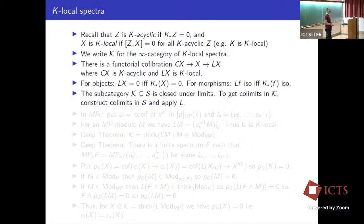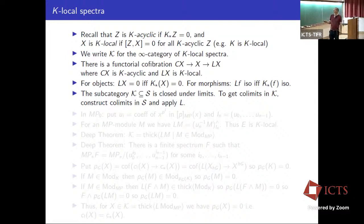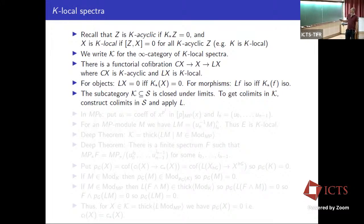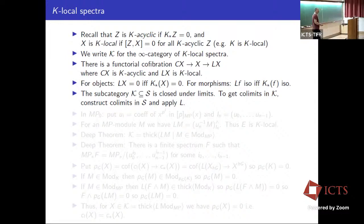We need to do limits and colimits in the category curly K, because we're looking at left and right adjoints Q lower star and Q lower shriek. Limits in curly K are just limits in the ambient category of spectra — curly K is closed under limits. For colimits, if you take a colimit of a diagram in K within spectra, the result need not be local, but you apply the localization functor L to make it local, and that gives the colimit in curly K.